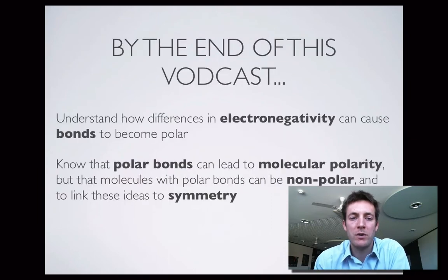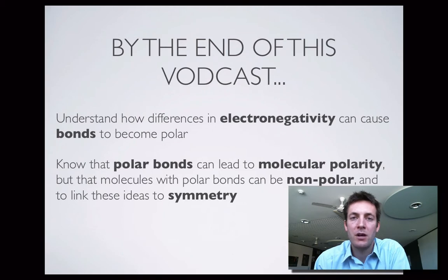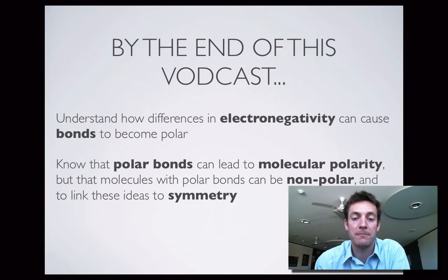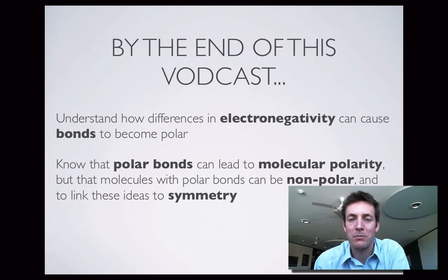This film deals with the fact that if you've got atoms that are bonded together that have different electronegativities, the bond between those atoms will be polar — in other words, the charge will be unevenly distributed in that bond. Once you've identified any bonds that are polar, you can start thinking about whether the molecule those bonds are in will also be polar. Finally, you'll look at how the symmetry of a molecule can affect whether it's polar or not, regardless of whether it's got polar bonds.